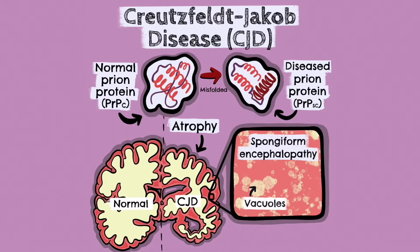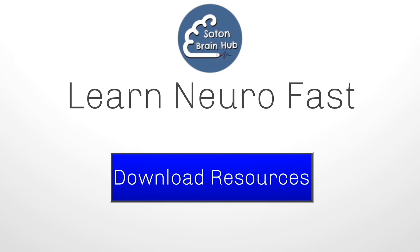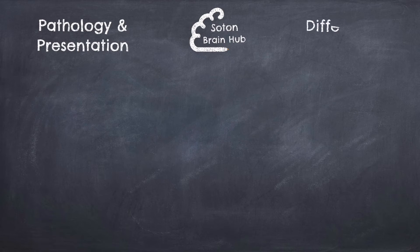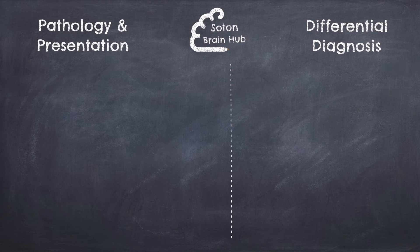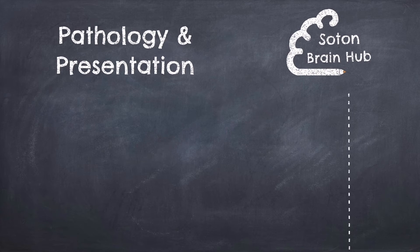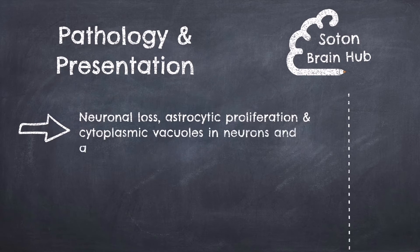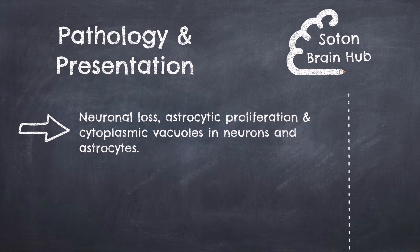Unfortunately, there is no treatment for CJD. As we touched on before, the underlying pathology in CJD is the neuronal loss which results in brain atrophy, astrocytic proliferation, and cytoplasmic vacuoles in neurons and astrocytes, which gives the brain the spongy appearance.